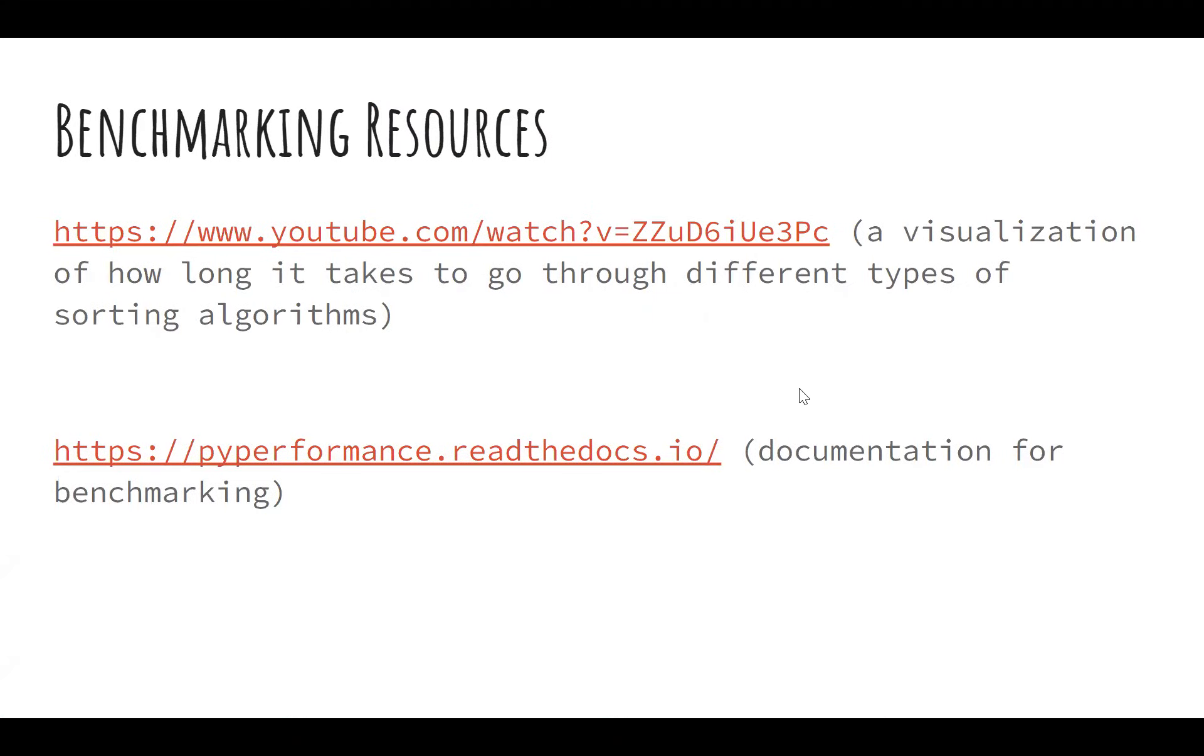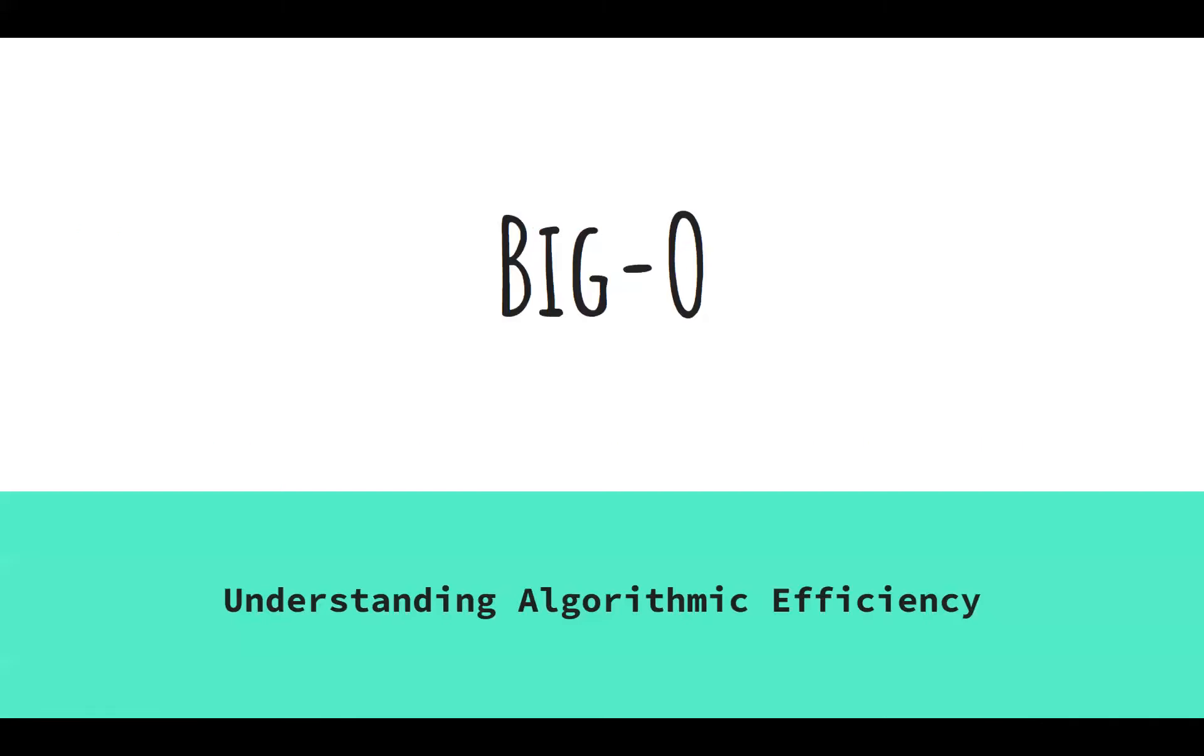So here's some resources that we're not going to go through. But the gist of algorithmic efficiency is, in programming, it's sort of like if you're running a business, you have two main commodities that you want to keep track of: how much time is being spent and how much money is being spent. When you're programming, it's fairly similar. Number one, how long does it take to run something? And number two, how much storage or memory is that taking up? Because those are the two things that you need to have enough of or else your code will not run properly.